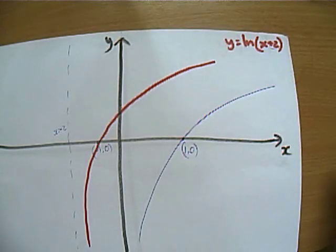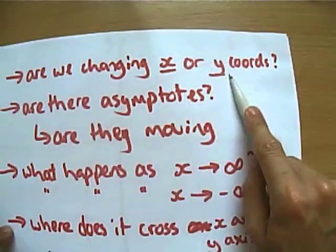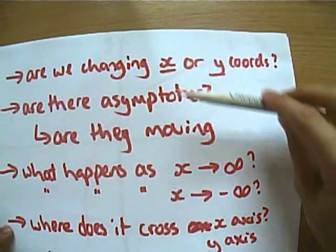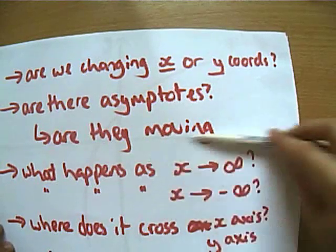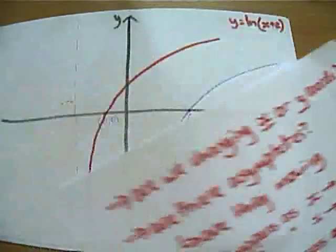Now the final thing we need to put to make this a nice sketch: if we come back to our handy sort of checklist of things, are we changing the x and the y coordinates? In this case we're shifting it around in the x direction. Are there any asymptotes and are they moving? Yes, we've talked about that. We've talked about as it tends towards infinity and negative infinity. What about where it crosses the x axis and the y axis?